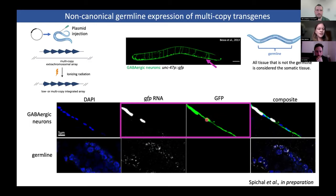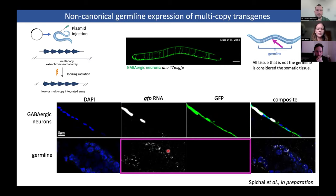However, we could also see a prominent amount of GFP RNA expression coming from the germline that did not co-localize with any GFP protein expression, which was interesting to us, and indicated that this GFP RNA was properly silenced and not translated.